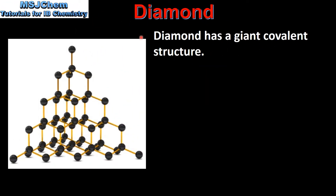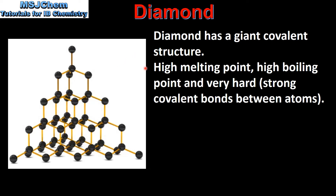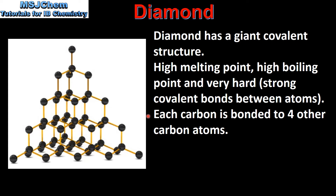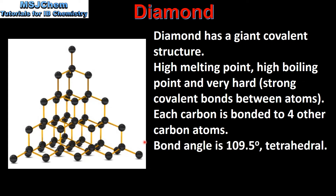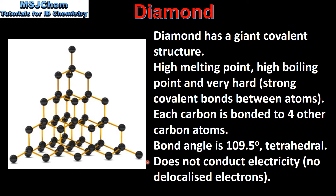Next we look at diamond. Diamond has a giant covalent structure which you can see here on the left. It has a high melting point, a high boiling point, and is very hard. This is because of the strong covalent bonds between the carbon atoms. Each carbon atom is bonded to four other carbon atoms. The bond angle between the carbon atoms is 109.5 degrees tetrahedral. Diamond does not conduct electricity as it has no delocalized electrons.